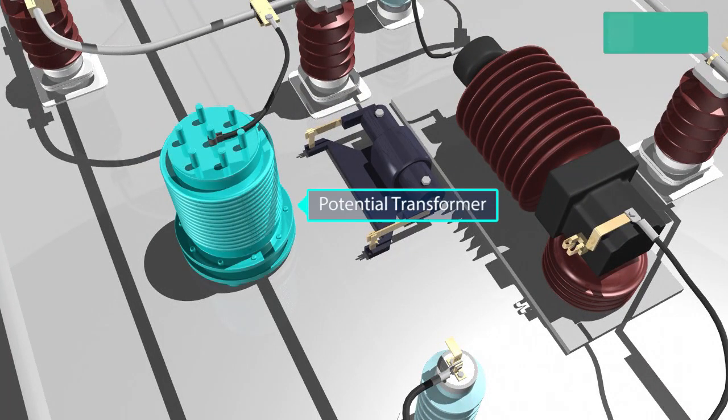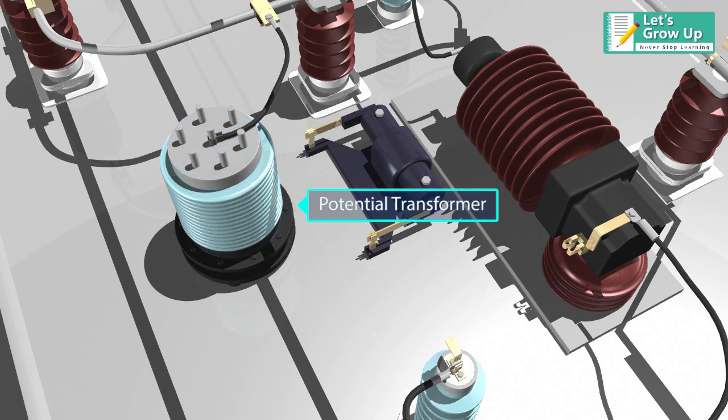Potential transformer: It is a voltage step-down transformer which reduces the voltage of a high-voltage circuit to a lower level.